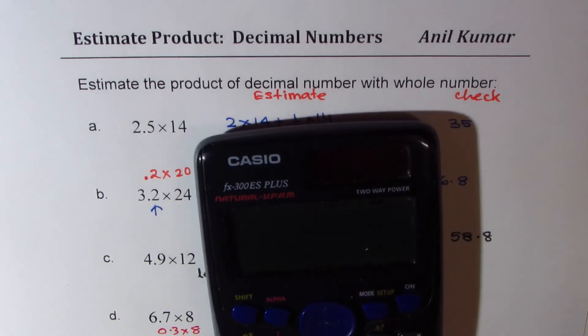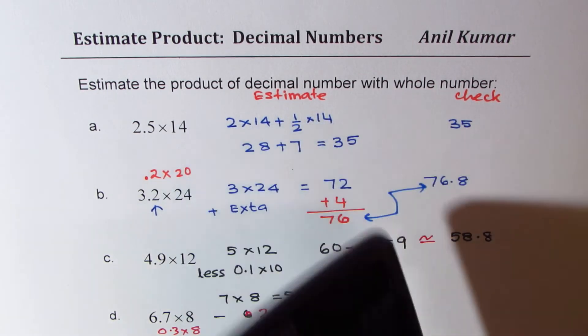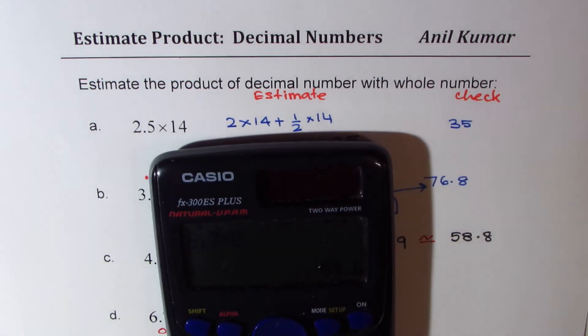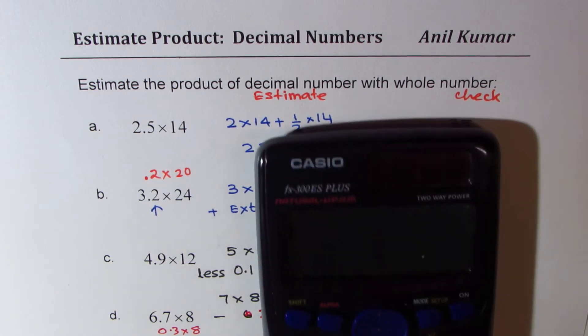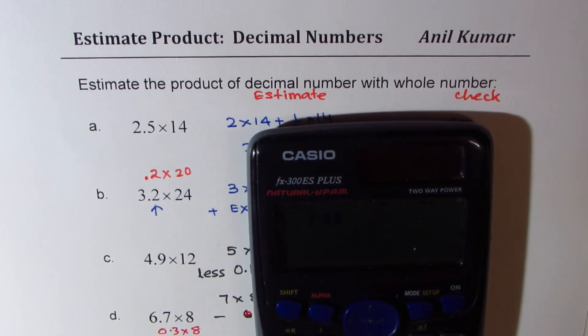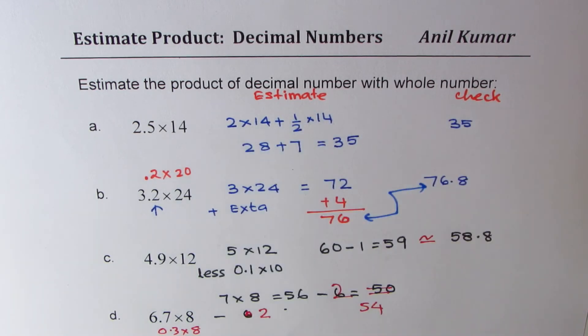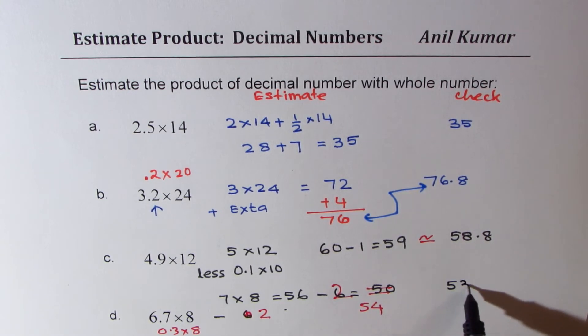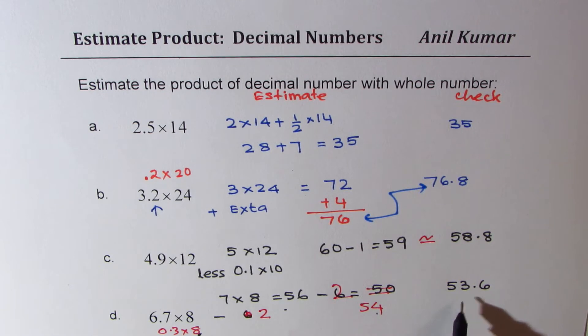Let us check the answer. We get 6.7 times 8 equals 53.6, which is very close to 54. So you should understand that we rounded 0.3 higher. So we have to take 0.3 times 8 away, which is 8 times 3 is 24. So we took away 2, giving us 54. A slightly higher number would have given an accurate answer. So with this exercise, you understand that you can fairly accurately estimate product of decimal numbers with whole numbers.